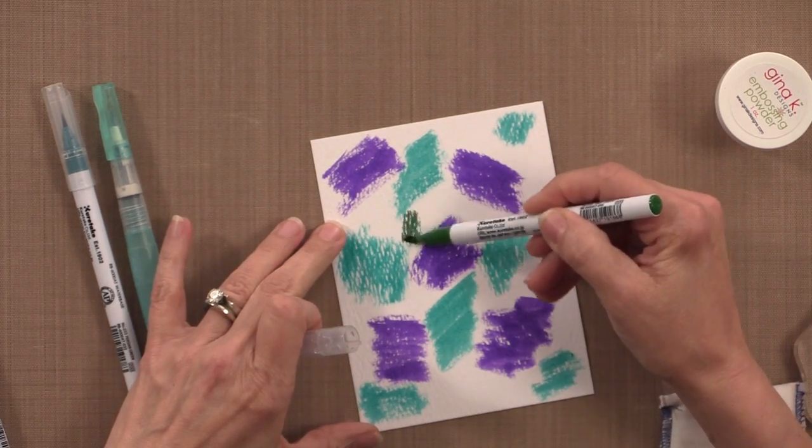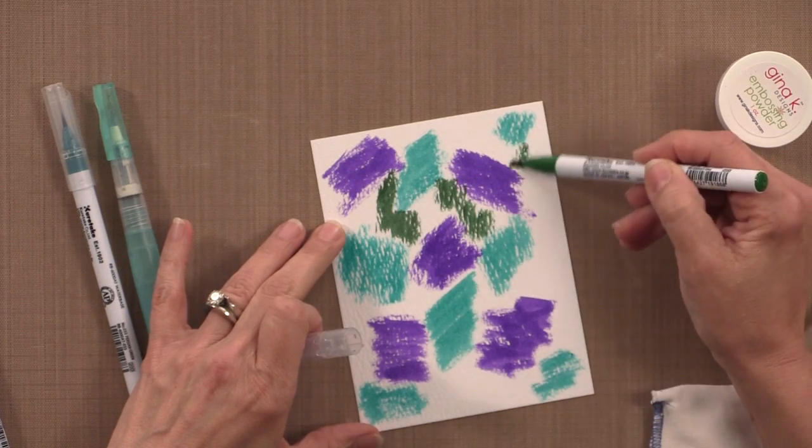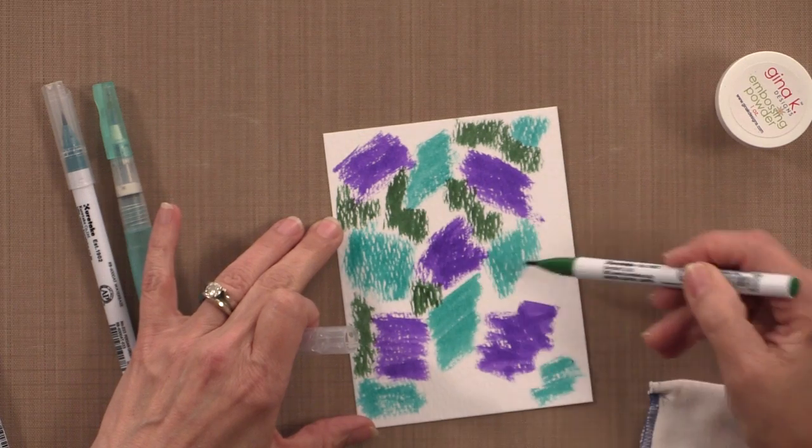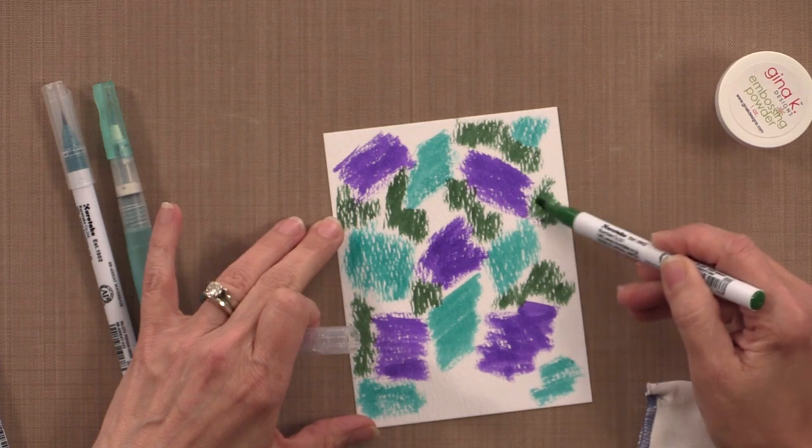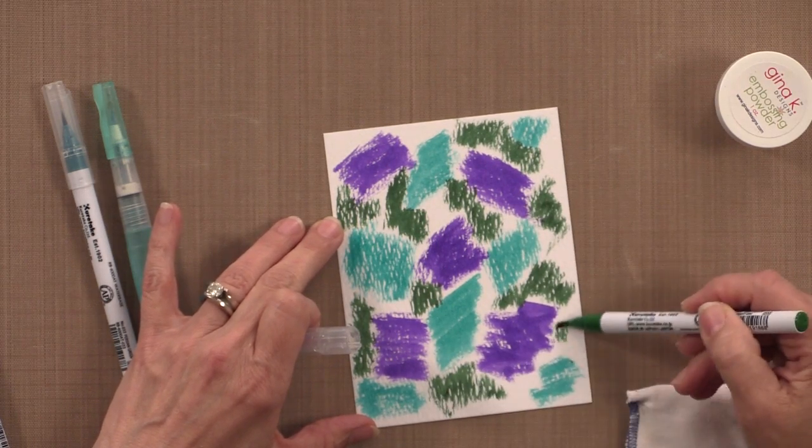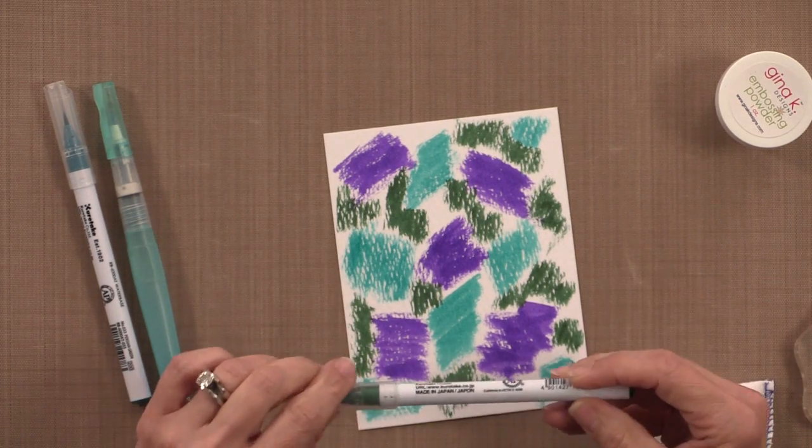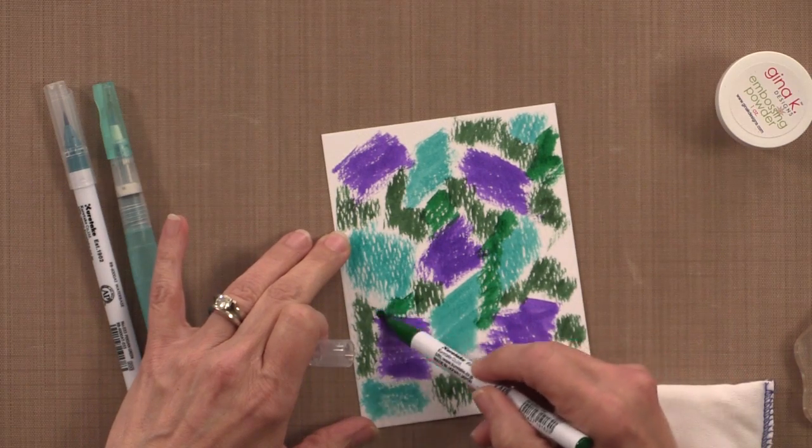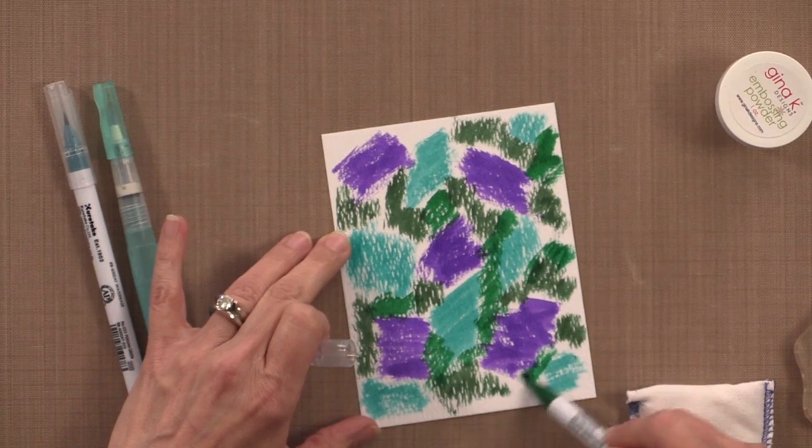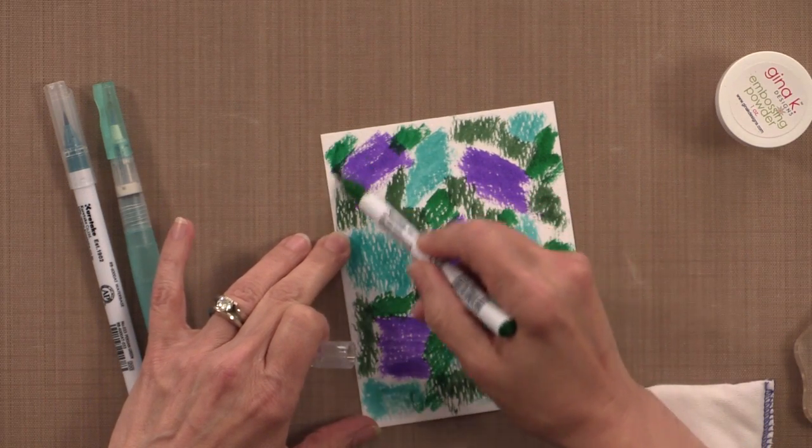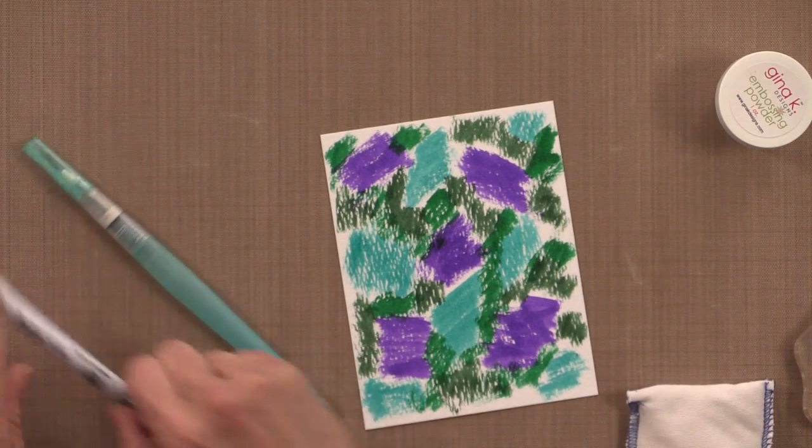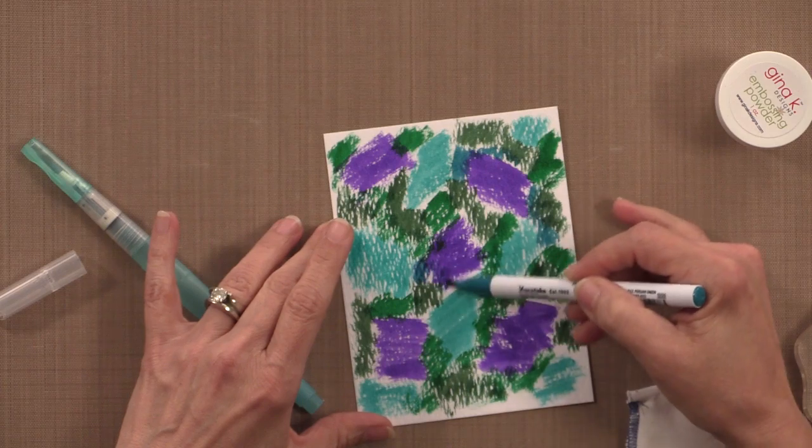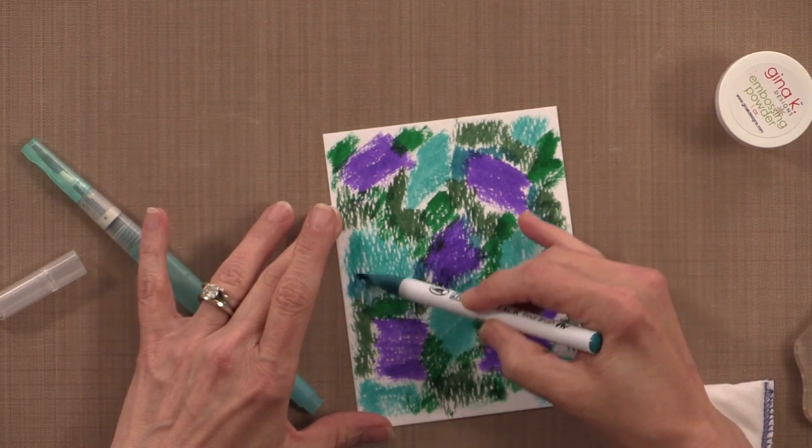I've also seen this technique done with Distress Markers so that will work, also the Tombow markers or maybe even peerless watercolors or some good watercolor paint. I'm going to add some deep green. Now I'm going to recommend if you're doing this technique that you stick with colors that are very vibrant and maybe even a little bit on the dark side. You can see that these colors are kind of darker, they're not the real pastel ones. This one is just the regular green, so I'll add some of that in there. That's a really pretty green.